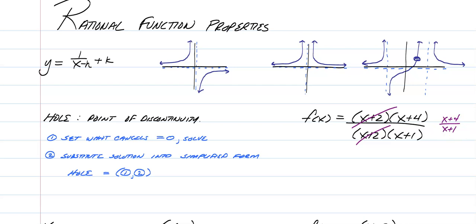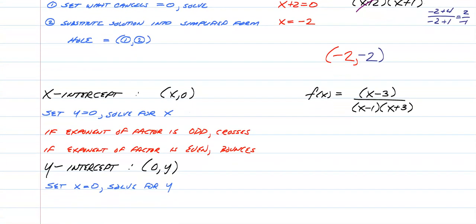To find the coordinate of your hole, what you do is you set what cancels equal to 0. So I'm going to set x plus 2 equal to 0 and solve. So x equals negative 2. That is your x-coordinate of the hole, so it's going to be negative 2 comma something. How do we find what it equals? You take what you get in step 1 and plug it into your simplified equation. So we're going to have negative 2 plus 4 over negative 2 plus 1, which is 2 over negative 1, and we know that is negative 2.